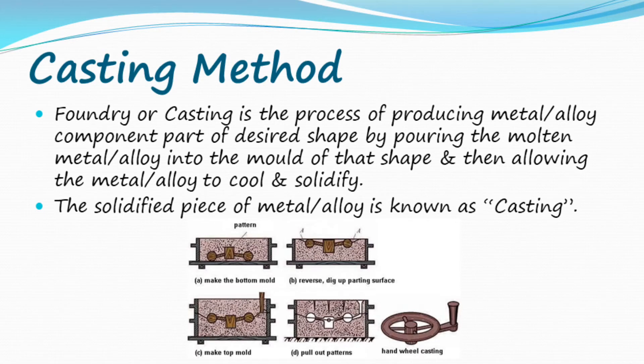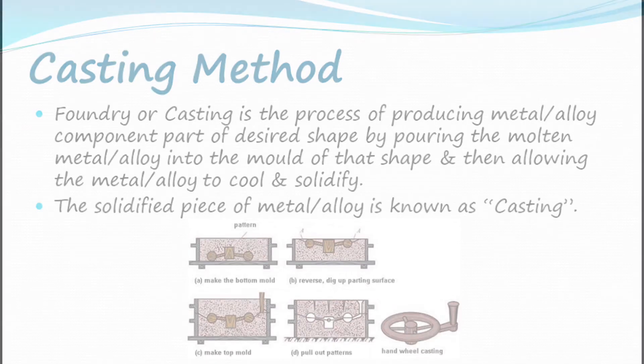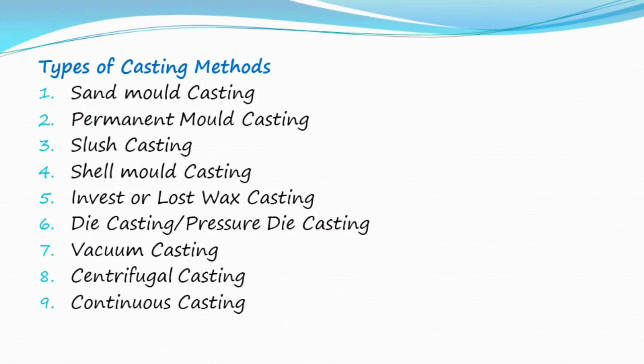Casting method: foundry or casting is the process of producing metal alloy component parts of desired shape by pouring the molten metal alloy into the mold of that shape and then allowing the metal alloy to cool and solidify. The solidified piece of metal alloy is known as casting.